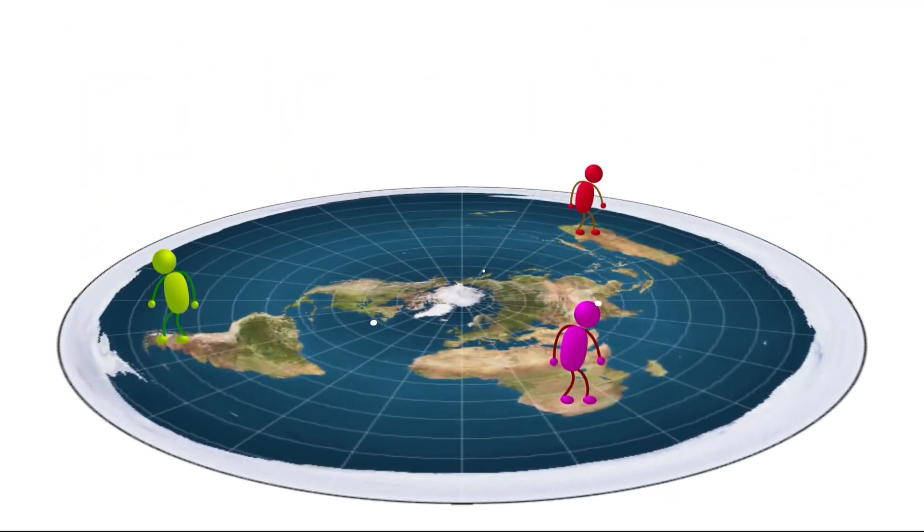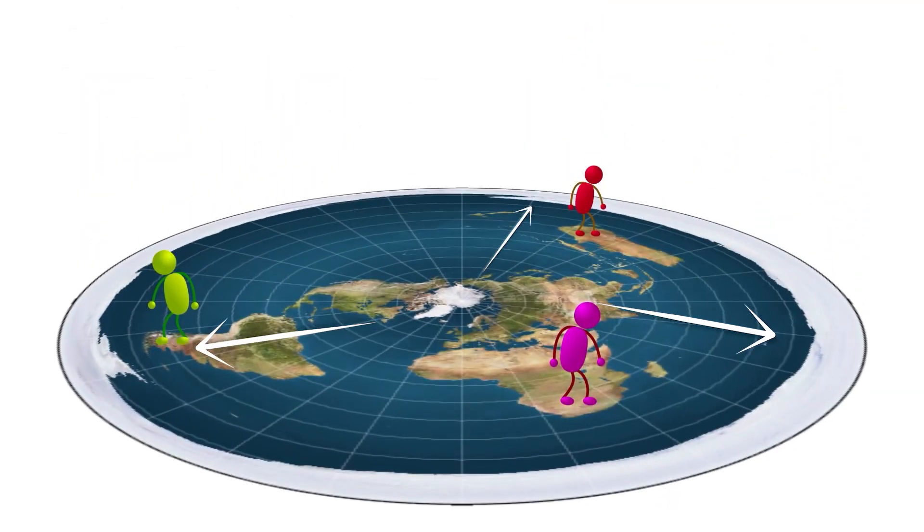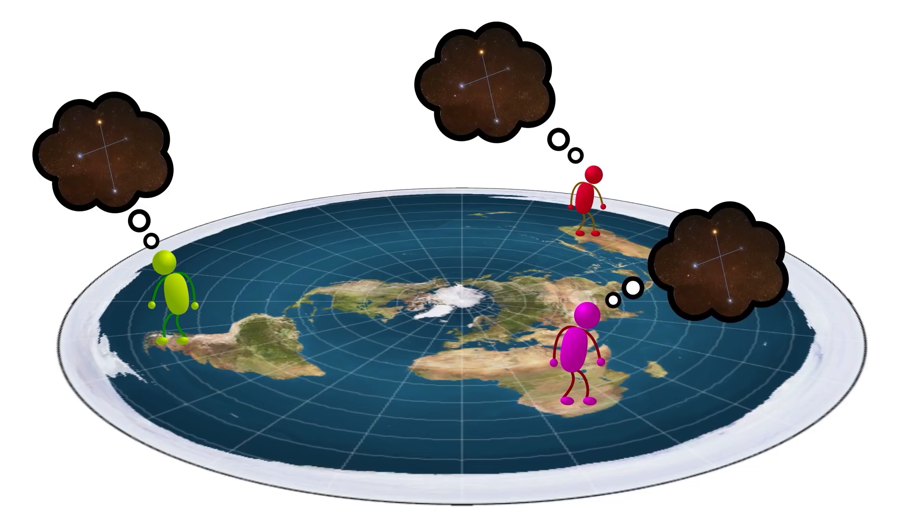But on a flat Earth, if everyone looked south, or I guess towards the Antarctic wall, because what really is south on a flat Earth, they would all be looking in different directions, yet they would somehow see the same stars.